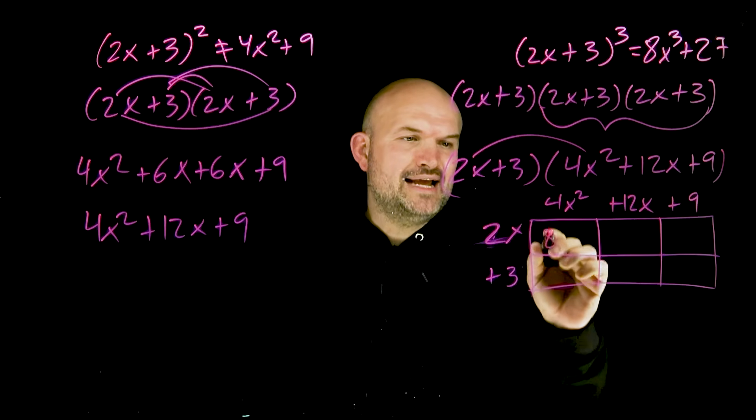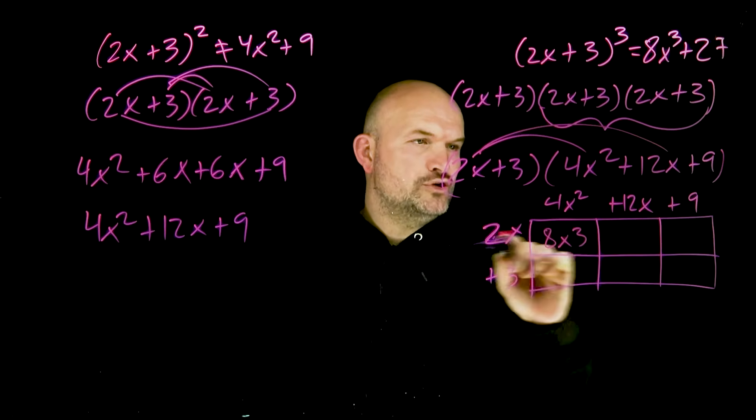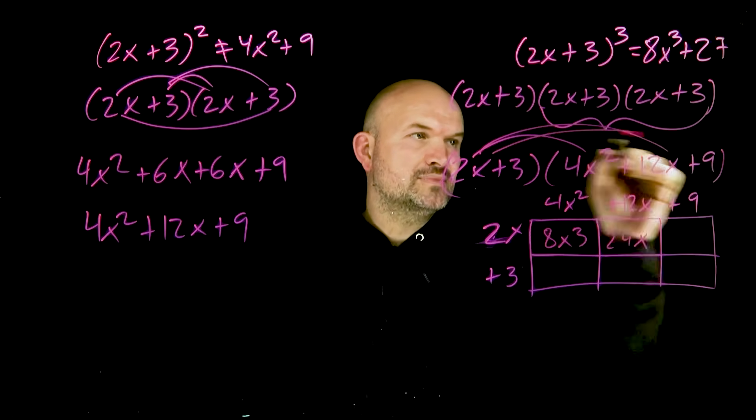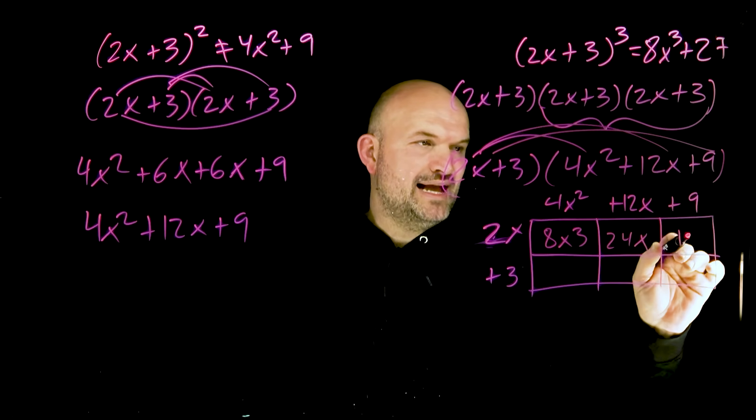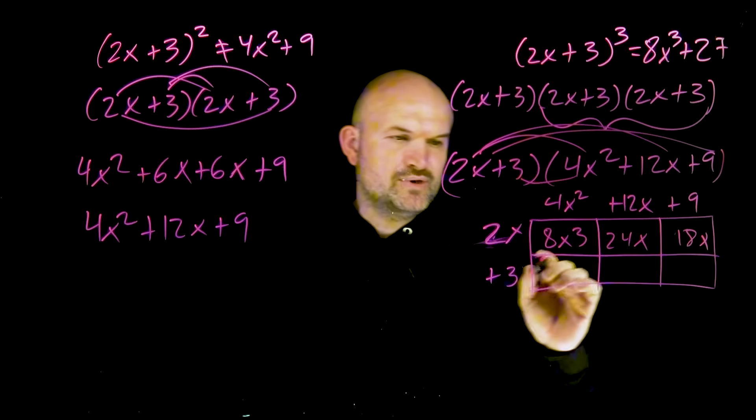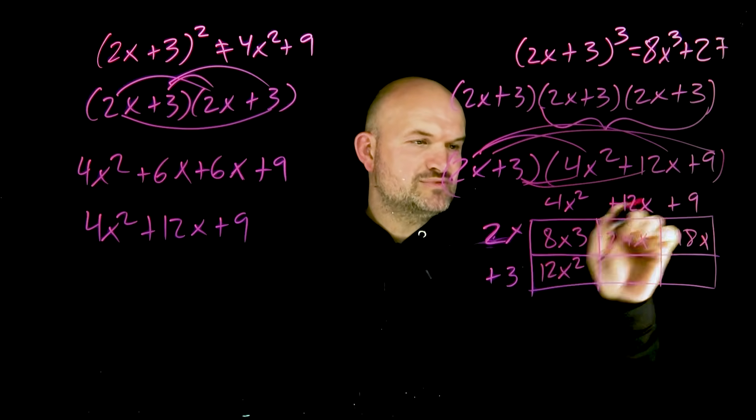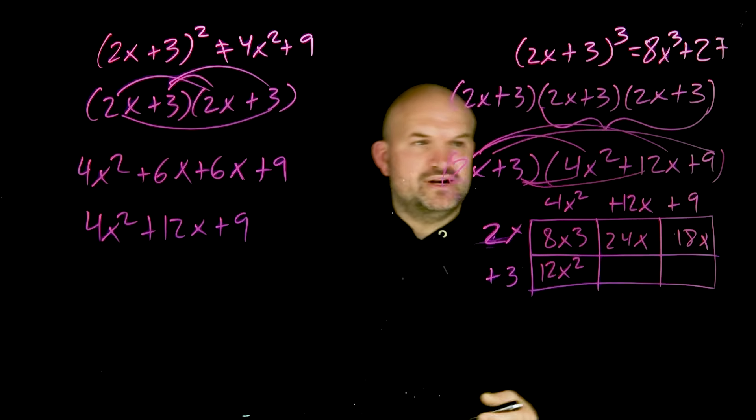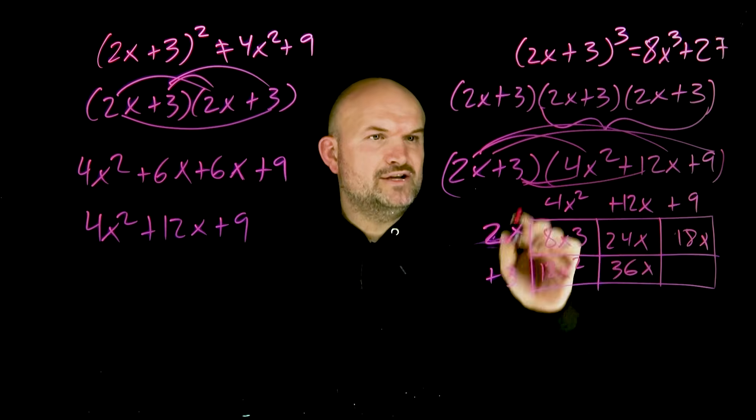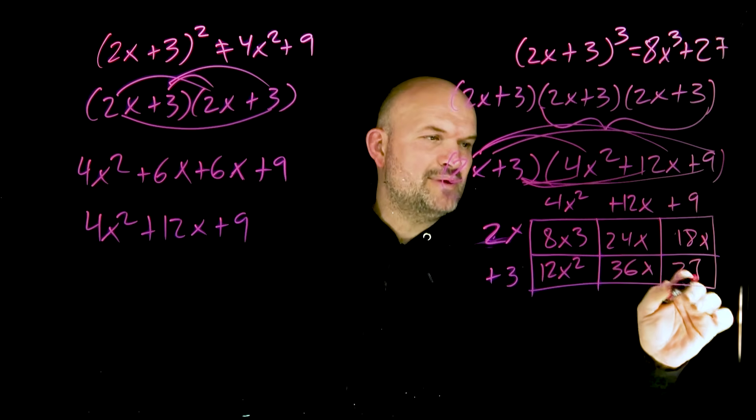So 2x times 4x squared is 8x cubed. 2x times 12x is 24x squared. 2x times 9 is 18x. Then 3 times 4x squared is 12x squared. 3 times 12x is 36x. And 3 times 9 is positive 27.